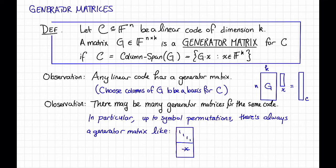You can see this basically by row reducing the matrix G until it looks like this. That's not going to change the subspace spanned by the columns of G, so this is going to be a generator matrix for the same code.